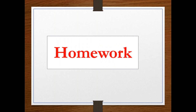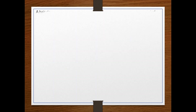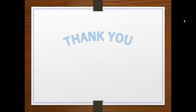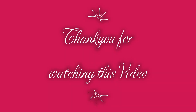Homework: a hair dryer converts 300 joule of energy into 150 joule of kinetic energy, 100 joule of thermal energy, and 50 joule of sound energy. Draw the Sankey Diagram to show these conversions using the proper scale. Please try it — I think you can do it since you've already drawn two. If not, let me know and I'll help you next time. Thank you very much.